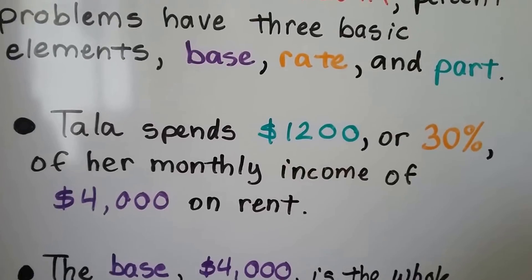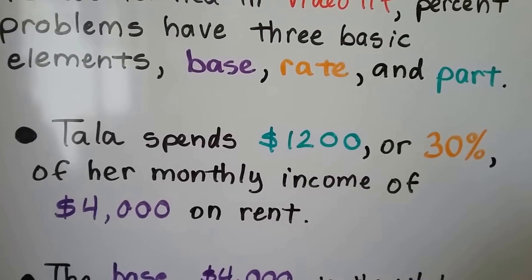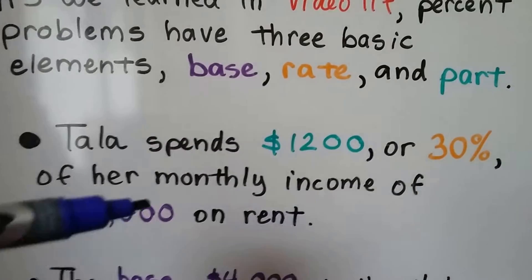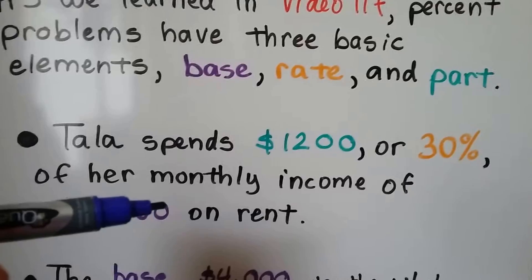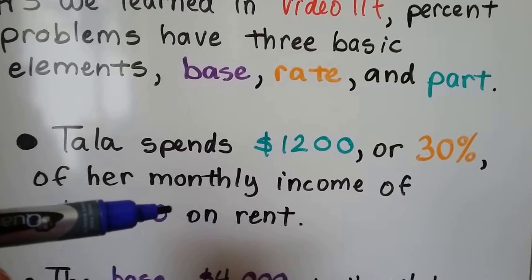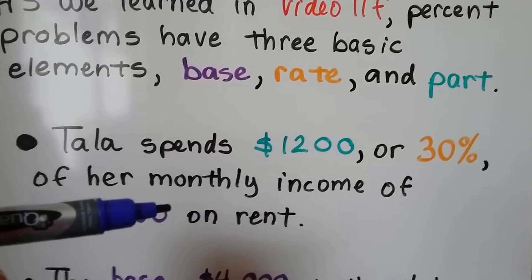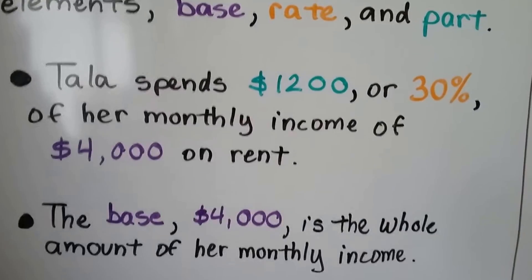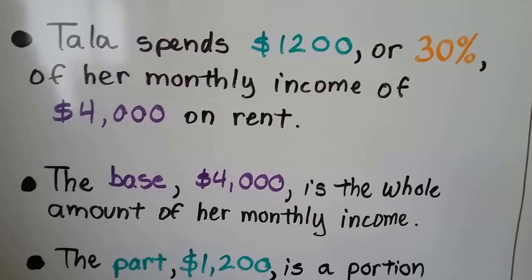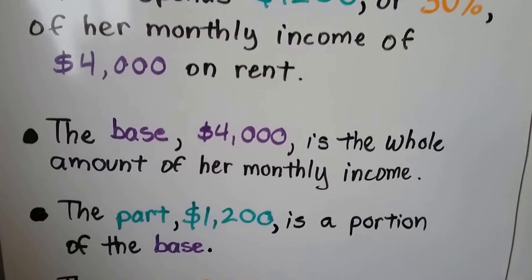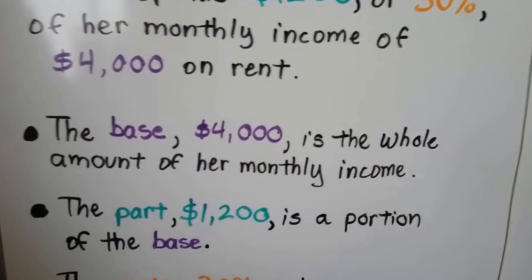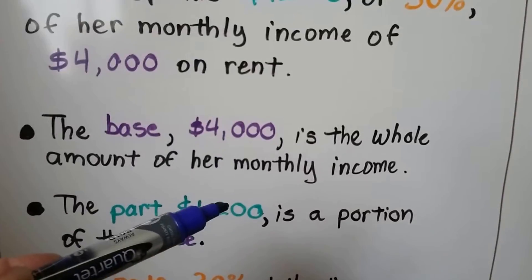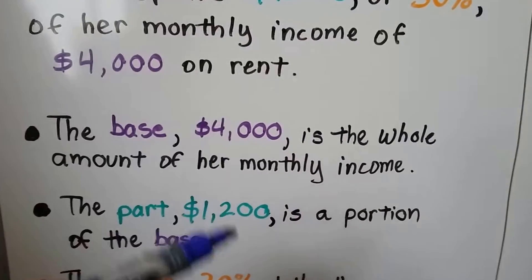We did this problem. Tala spends $1,200 or 30% of her monthly income of $4,000 on rent, and the $4,000 was the base and it was missing. All we knew was that her rent was $1,200 and it was 30% of her income. We needed to find her base income, and we did. The base, $4,000, is the whole amount of her monthly income. The part, $1,200, is a portion of this base. This is her rent that she pays. This is how much she sets aside for rent, so it's part of her monthly income.